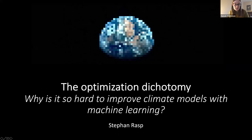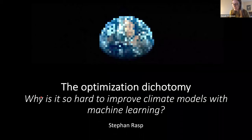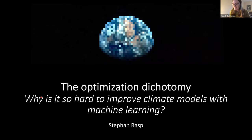We have Stefan Rasp joining us to talk about the use of machine learning in climate models. Stefan did his PhD and a postdoc in Munich before recently moving to Climate AI, a very exciting company bringing insights from AI and machine learning to farmers and the food supply chain to improve resilience to a changing climate. Please do interrupt as we go along and type questions in the chat.